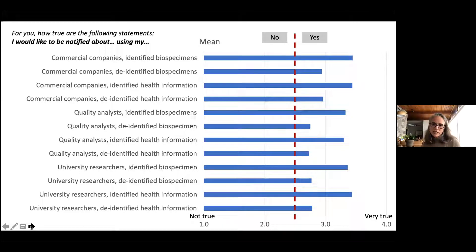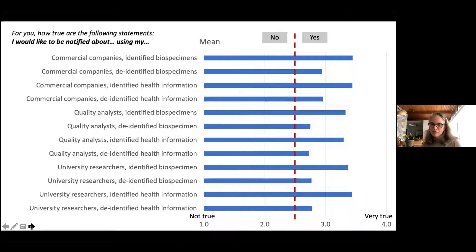Interestingly, there isn't a huge differentiation between health information and biospecimens — people think about those in similar ways. They're also not making a strong distinction between university researchers and quality analysts, which essentially puts the LHS-embedded researcher or quality analyst in the same category: please notify your patients about what's being done with their data.